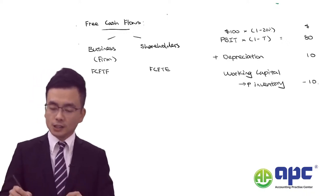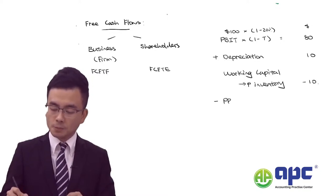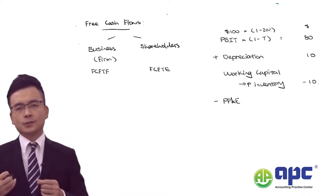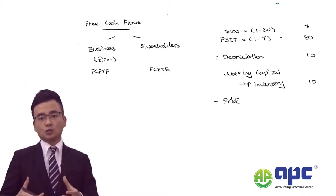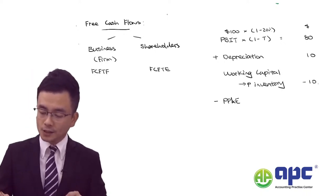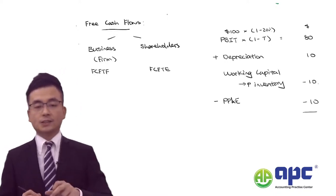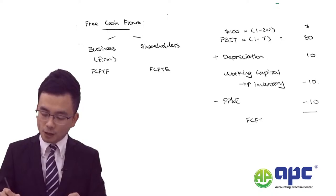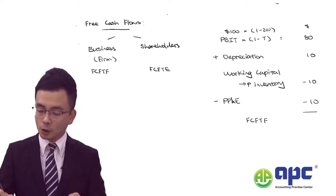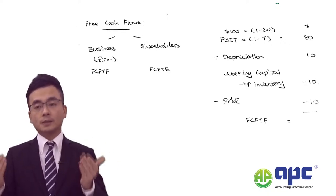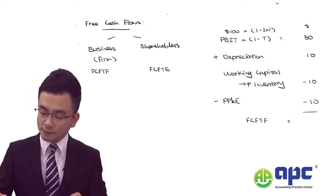We also need to minus the PP&E (property, plant and equipment) because, for example, we invest additional money in buying PP&E — let's say $10 out. So the free cash flow to firm (FCFF) becomes: 80 plus 10 equals 90, minus 10, minus 10, equals $70.